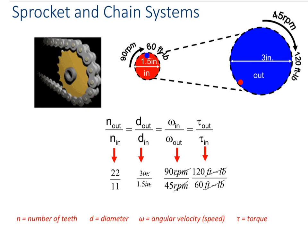With sprockets, you're going to do the math the same way as you've already learned for gears. We have the number of teeth, the diameter, the angular velocity, and torque. You're going to do the same out-over-in ratio: the driver sprocket is our in, the driven sprocket is our out. And if we have compound sprocket-chain systems, you do the math the same way we did for compound gears.